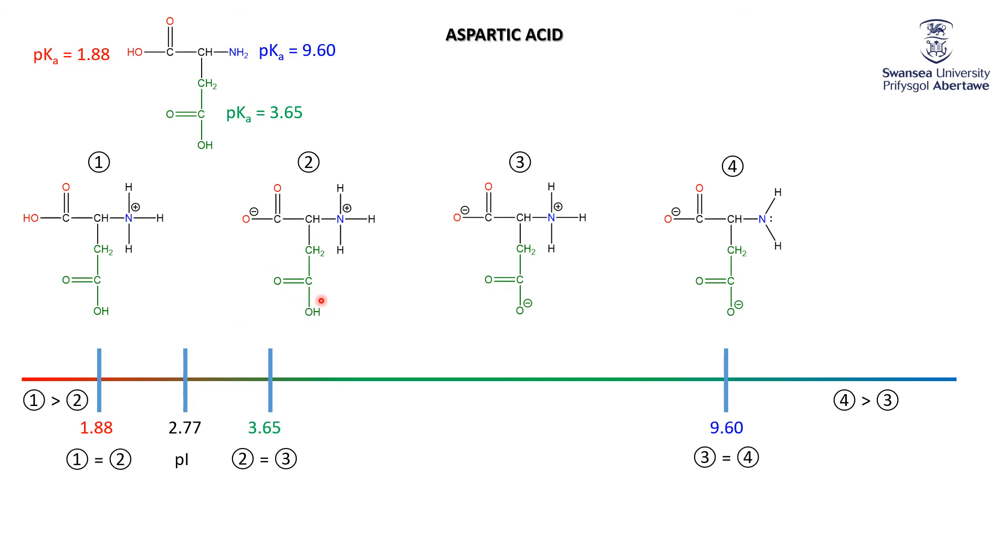Despite having this extra acid, the zwitterion is still when you've got the original red acid in its base form and the original amine in its acid form. So aspartic acid and glutamic acid are more complicated than glycine because of this extra acid group. There are also amino acids with an extra basic group in the R group. The next video will cover all the important amino acids. We're moving away from physical chemistry back into organic chemistry, but I hope you understand the importance of the pKa's and, most importantly, the isoelectric point of amino acids.